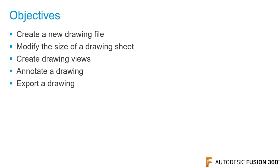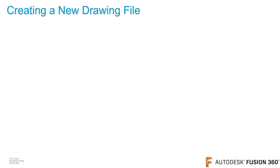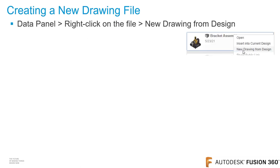I want to start by giving a quick overview of the process to create a drawing inside of Fusion 360. There are three methods to create a new drawing file. For the first method, display the data panel and right-click on the desired component or assembly, and from the menu, click New Drawing from Design.